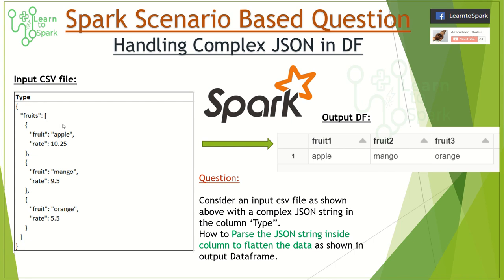Inside the JSON we have a list which contains fruit: apple, fruit: mango, fruit: orange. We need to parse it in such a way that we get separate columns — fruit1, fruit2, fruit3 — with apple, mango, and orange respectively.